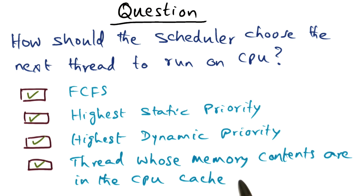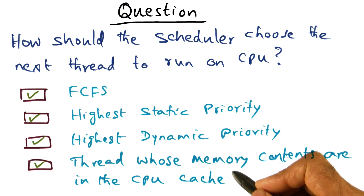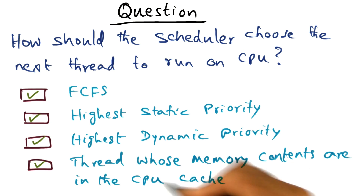The fourth choice is: pick the thread whose memory contents in the CPU cache are likely to be the highest. What that means is that the thread that has the cache warm for its working set is likely to do really well when it gets scheduled on the processor. So it makes sense to suggest that this might be a good choice as well.